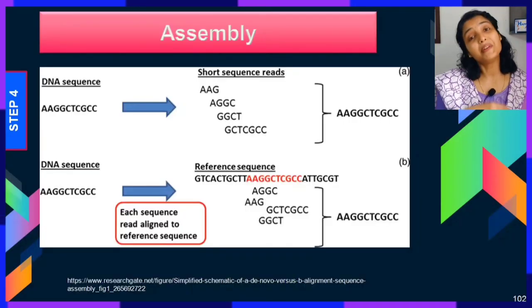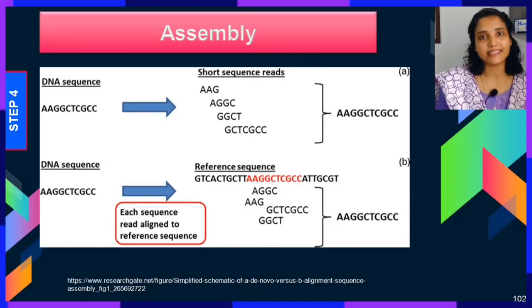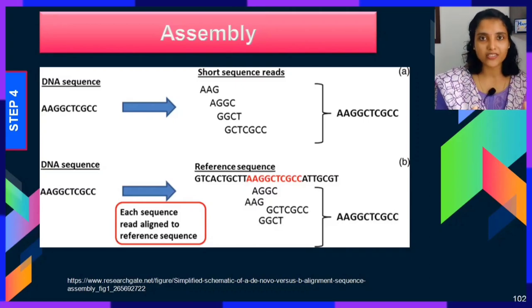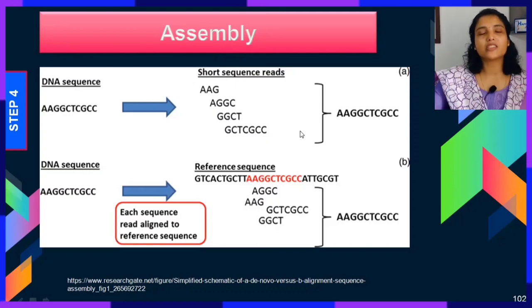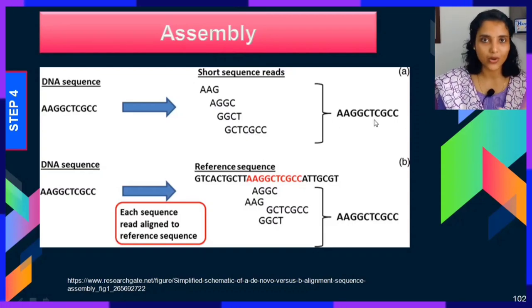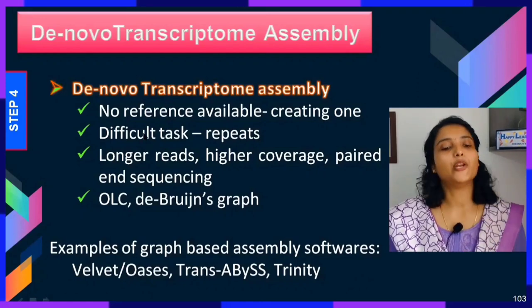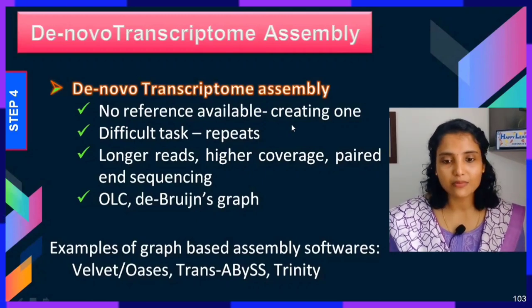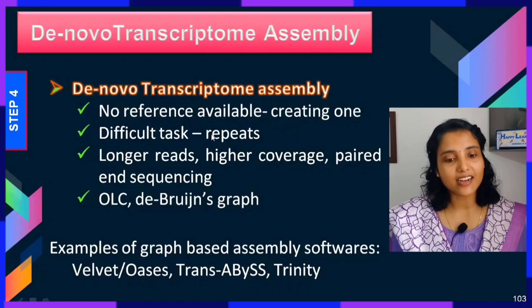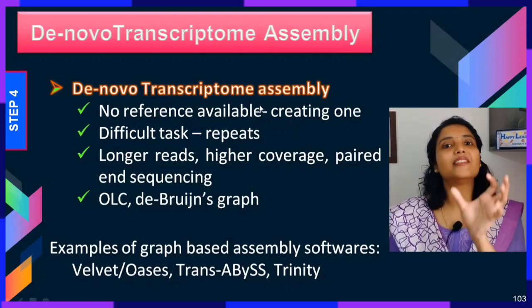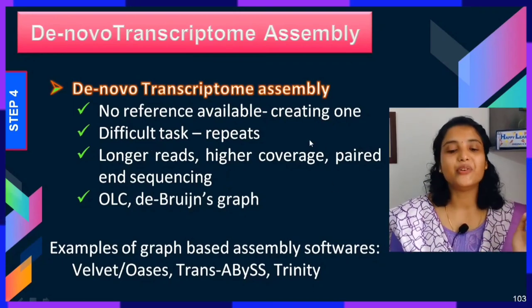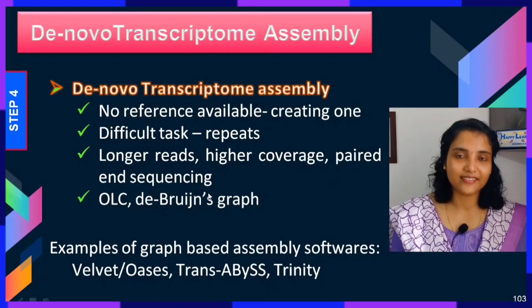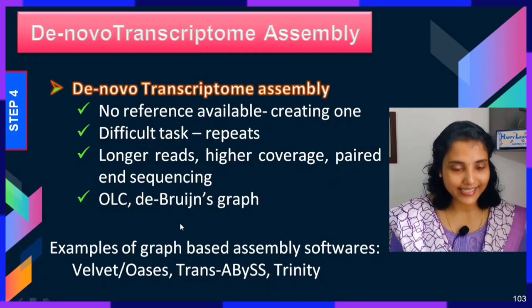There are two approaches for assembly. The first is de novo assembly — you have no reference genome, so you use short sequence reads, find overlaps, and build the sequence from scratch. This is a difficult task because repeated sequences make it hard to know where to place them. For de novo transcriptome assembly you need longer reads, higher coverage, and paired-end sequencing. Approaches used include overlap layout consensus (OLC) or de Bruijn graph. Software examples include Velvet, Oases, Trans-ABySS, and Trinity.